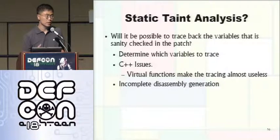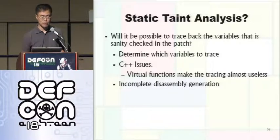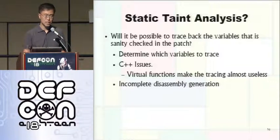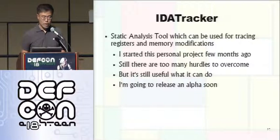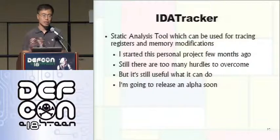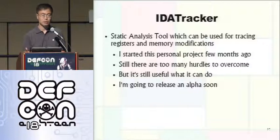How about static taint analysis for binary diffing? I was trying to write a tool to trace all variables back to see if they are taintable. Looks like it's a very hard job — there are C++ issues, and if the binary is very big, it usually generates an incomplete disassembly list. I was making an attempt to write some static analysis tool called i.tracker, but it's not releasable right now. I'm still working on that code, and maybe it will be combined with the binary diffing tool in a few months.